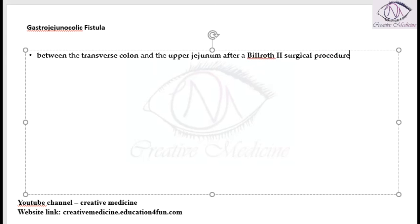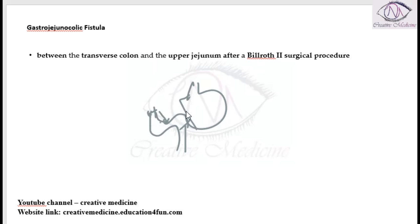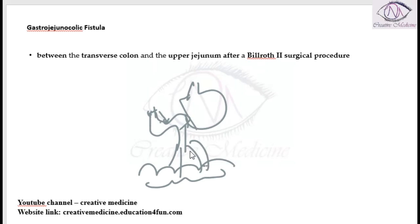This fistula occurs after a Billroth 2 procedure. If you draw a diagram of the Billroth 2 procedure, after that procedure a fistula develops between the transverse colon and the upper jejunum, which is called a gastrojejunocolic fistula.